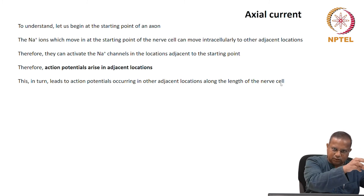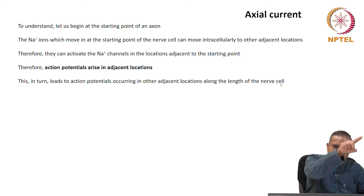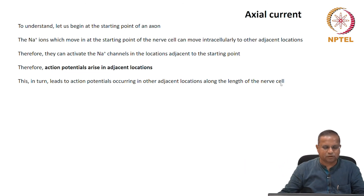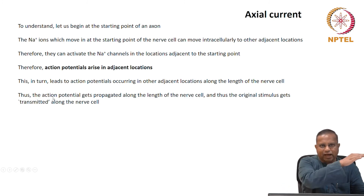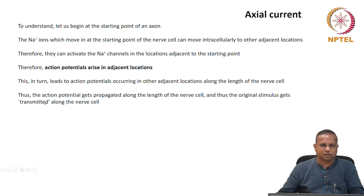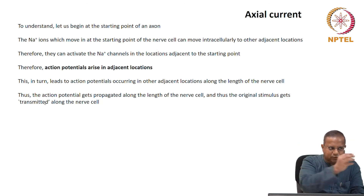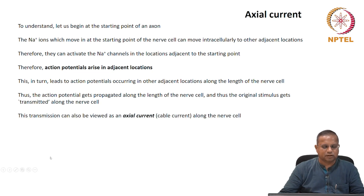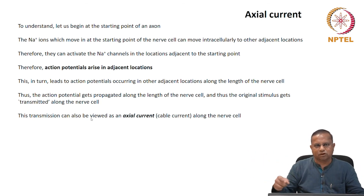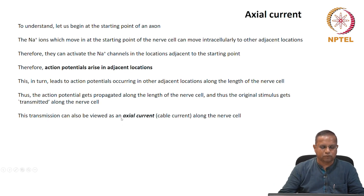This in turn leads to action potentials occurring in other adjacent locations along the length of the nerve cell. Because of the second action potential, more sodium is inside, which diffuses further and causes a third action potential just next to the second. So there is a series of action potentials along the length of the axon. Thus the action potential gets propagated along the length of the nerve cell, and the original stimulus gets transmitted. This transmission can be viewed as an axial current — also called the cable current — across the nerve.